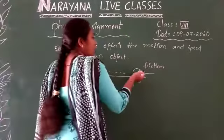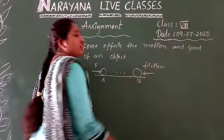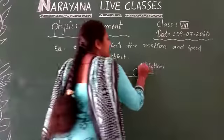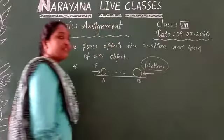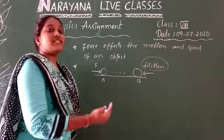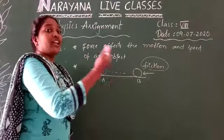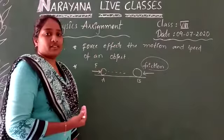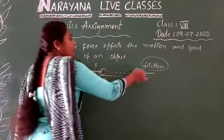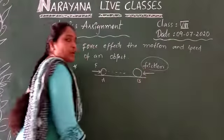So here the force applied on the object in this case is friction. That means friction opposes or resists the relative motion of a body. So it opposes the relative motion of a body.